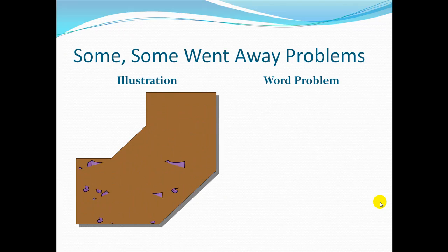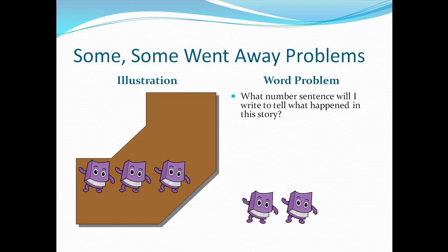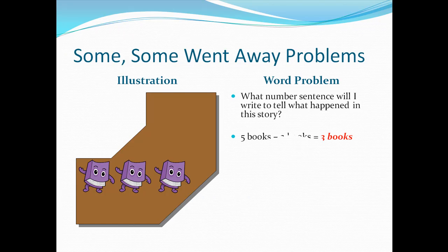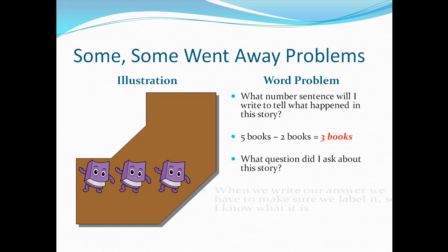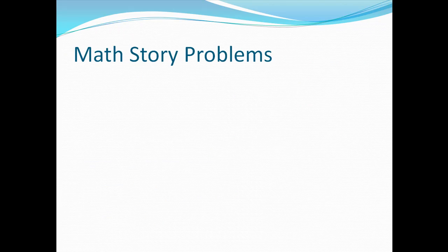One more example here. See if you can figure out the number sentence for this story problem. I start out with five books, two go away. So your number sentence is five books minus two books equals three books left. What happened in this story? I had some, and some went away. Make sure that your answer is labeled.